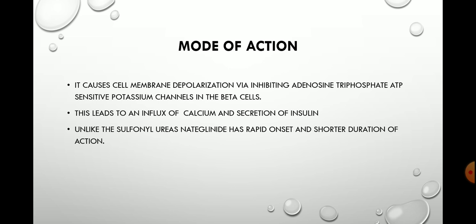Next, the mode of action of nateglinide. It causes cell membrane depolarization by inhibiting the adenosine triphosphate (ATP)-sensitive potassium channels in the beta cells. This leads to an influx of calcium and secretion of insulin. Unlike sulfonylureas, nateglinide has a rapid onset and shorter duration of action.